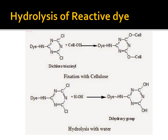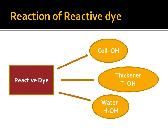We cannot get the desired percent color. Cross staining may happen, and this printing fault may occur because of hydrolyzed reactive dye. It also causes poor wash fastness. During washing, the hydrolyzed dye may come out and cause staining of other garments.